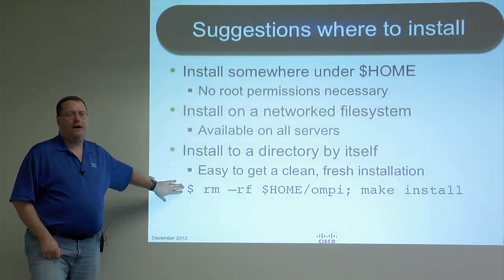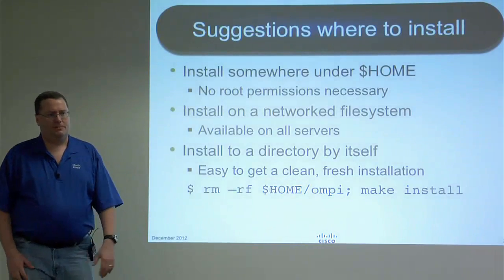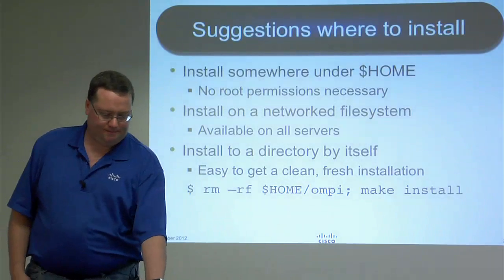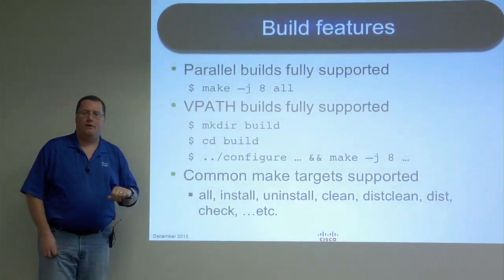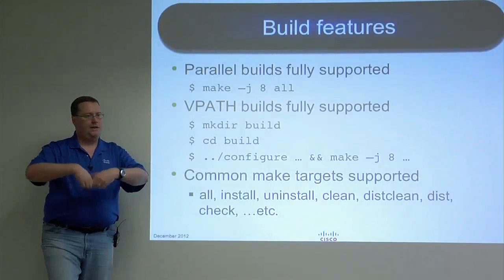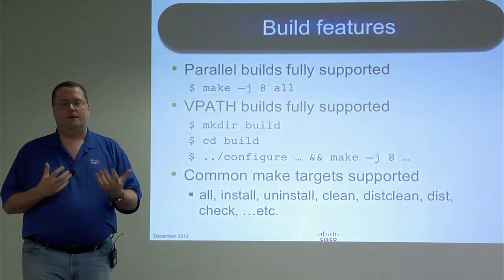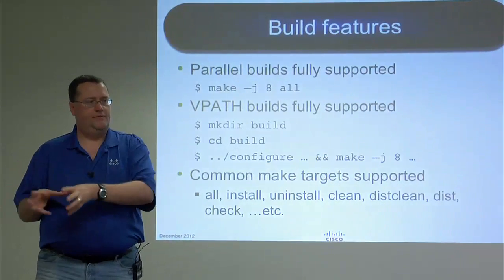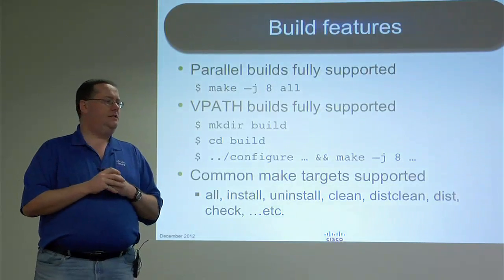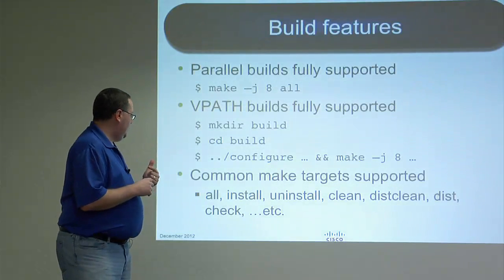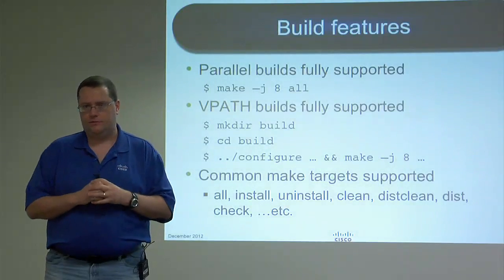This is actually a very valuable step — you can delete the entire installation tree and get a new installation, since you never know when things will be stale, particularly in a development environment. Build features: parallel builds are fully supported, so you can do make -j8 meaning eight compilations going on simultaneously. VPath builds also work and are fully supported — you can make a subdirectory, run configure and make in there so you don't pollute the build tree. All common make targets are also supported: all, install, uninstall, clean, distclean, dist, and so on. These are very GNU-ish targets, and we support all of them because we use the GNU tools for building.